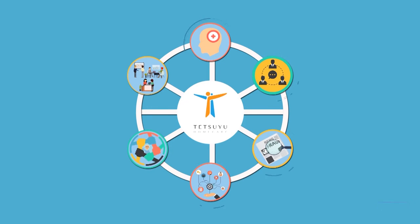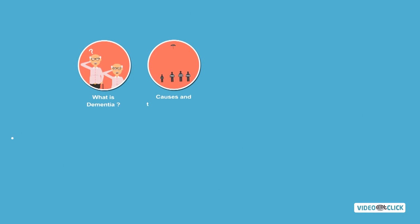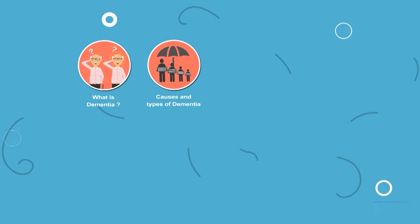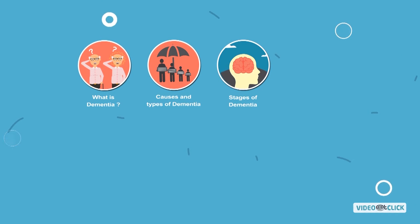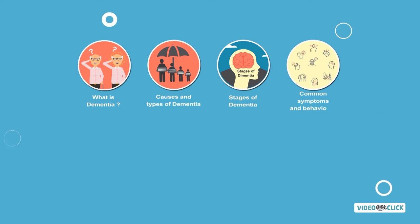Topics touched on during this course include: What is dementia? Causes and types of dementia, including early-onset dementia. Stages of dementia. Common symptoms and behaviors.